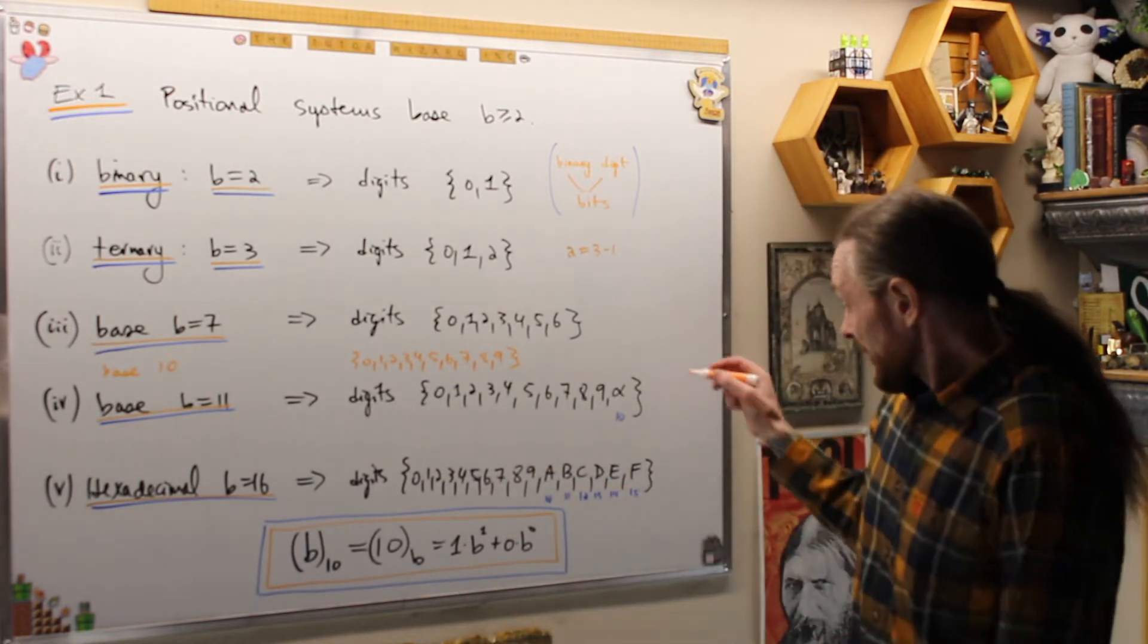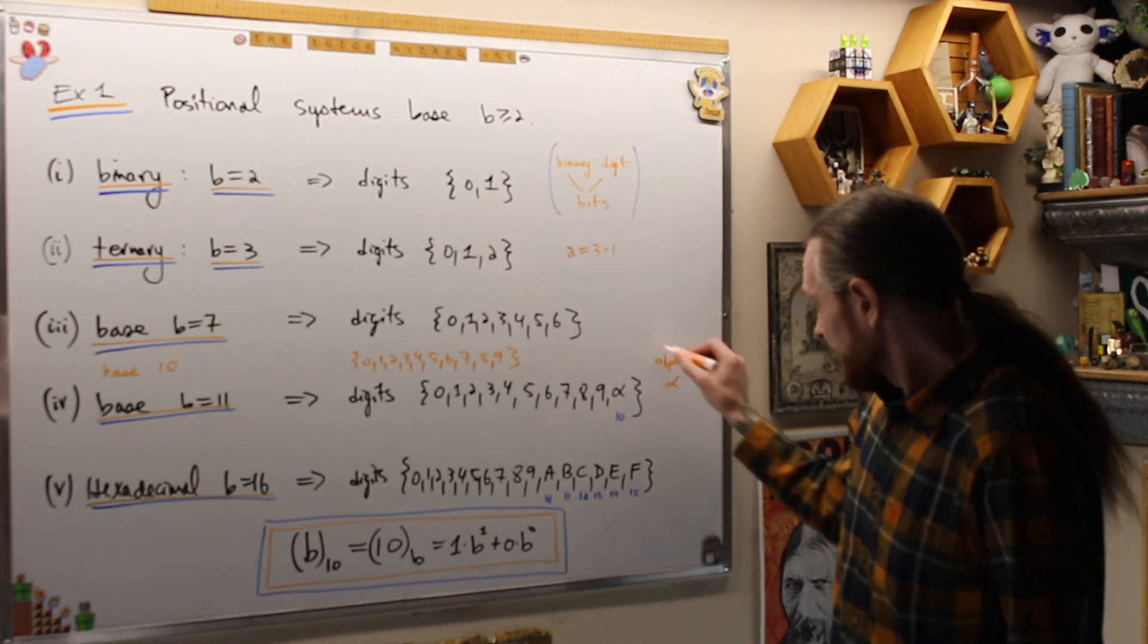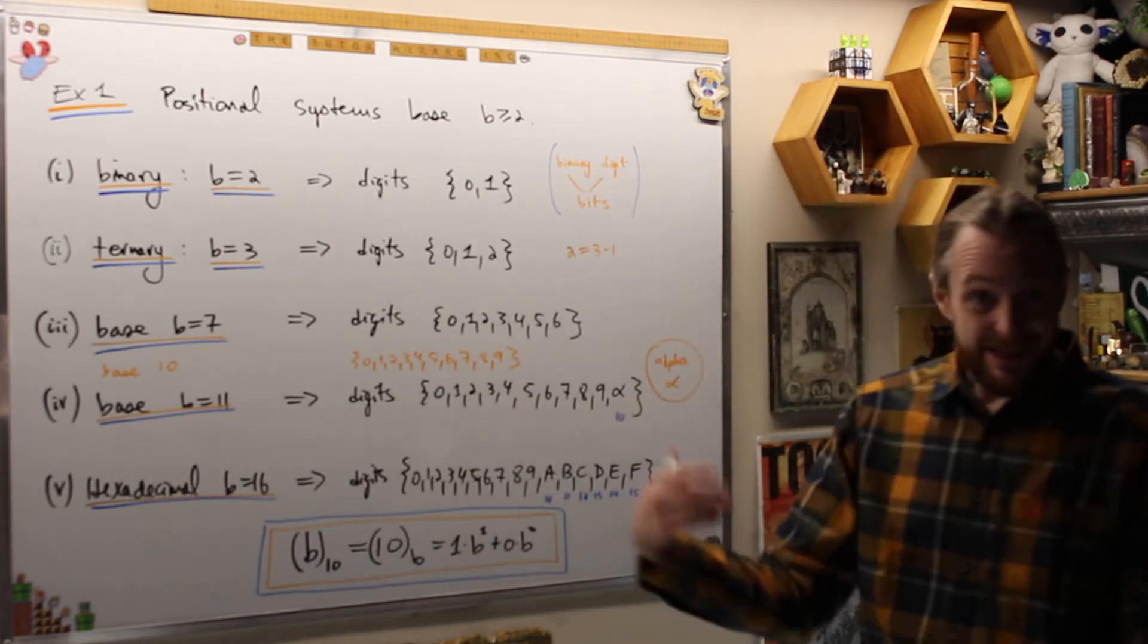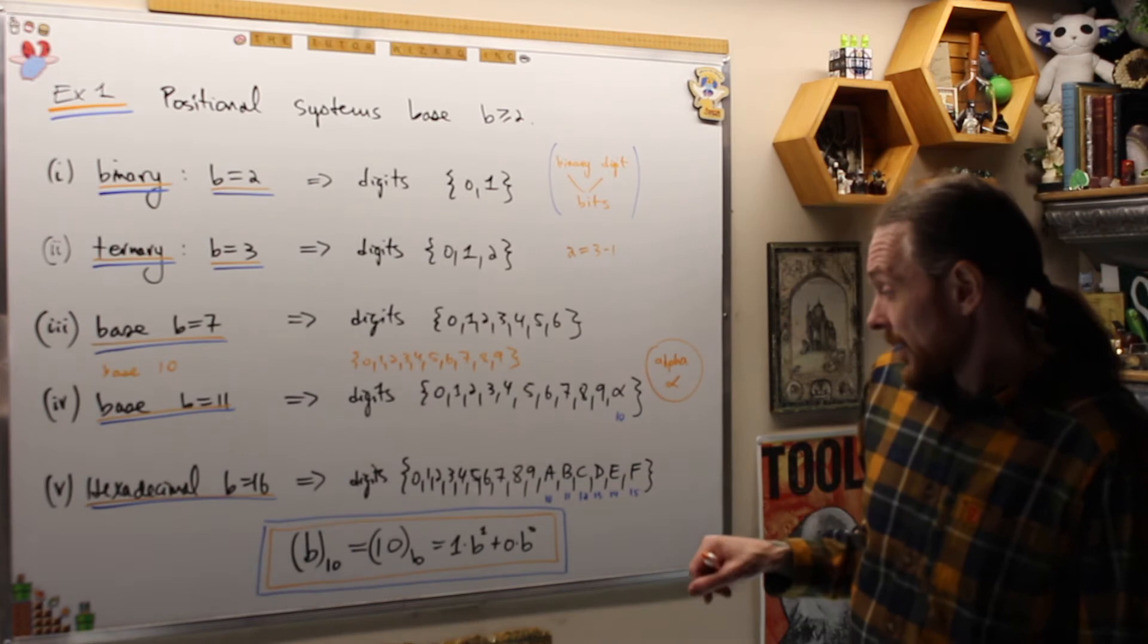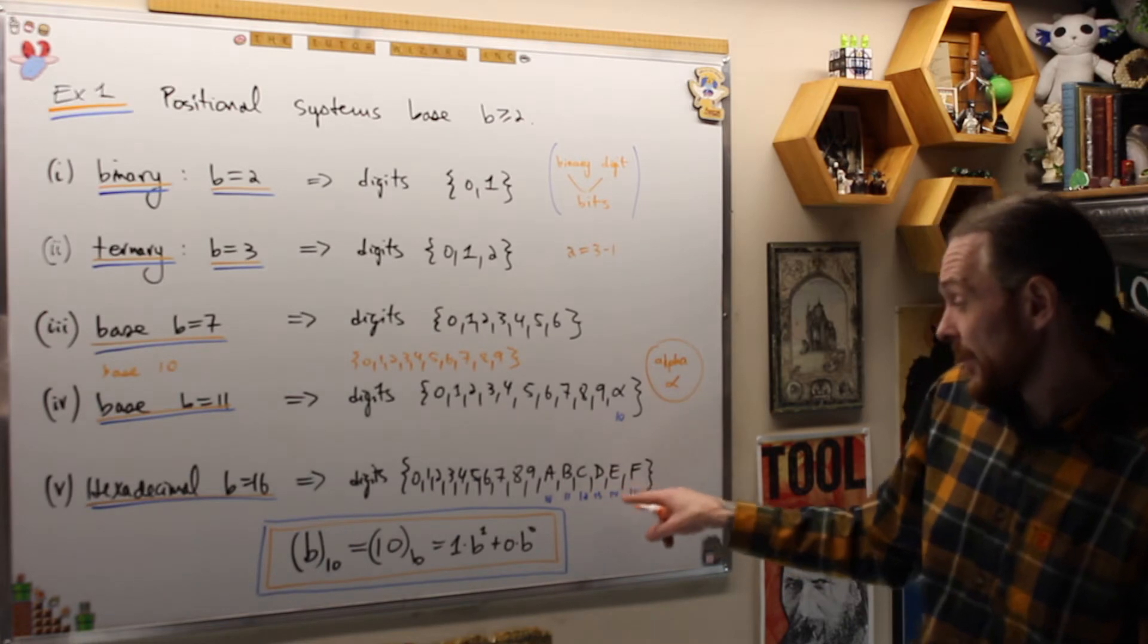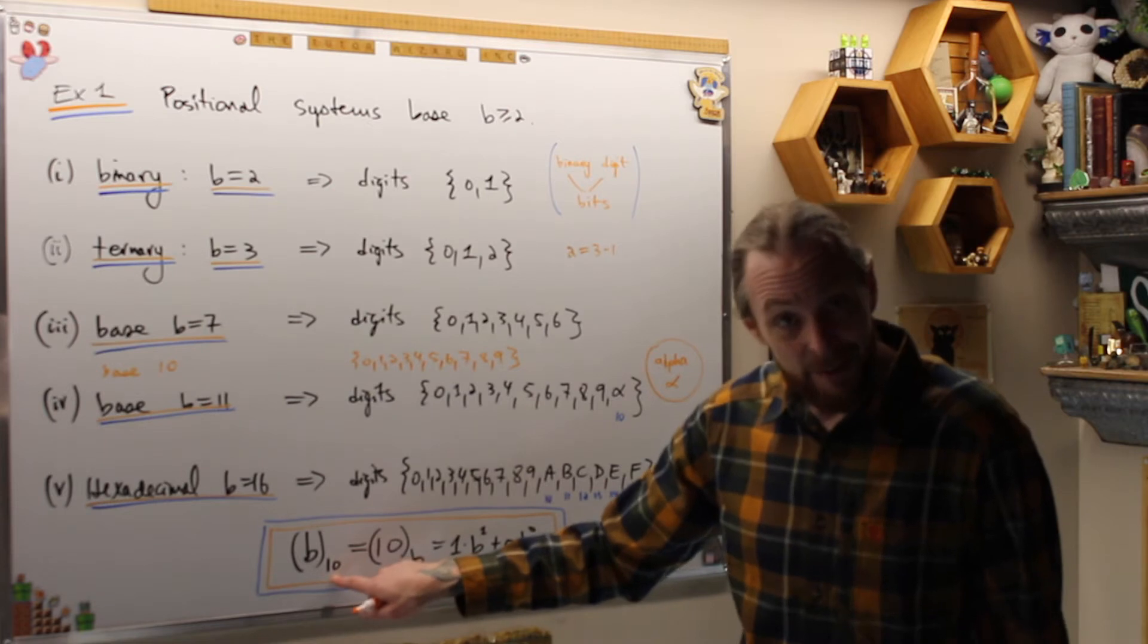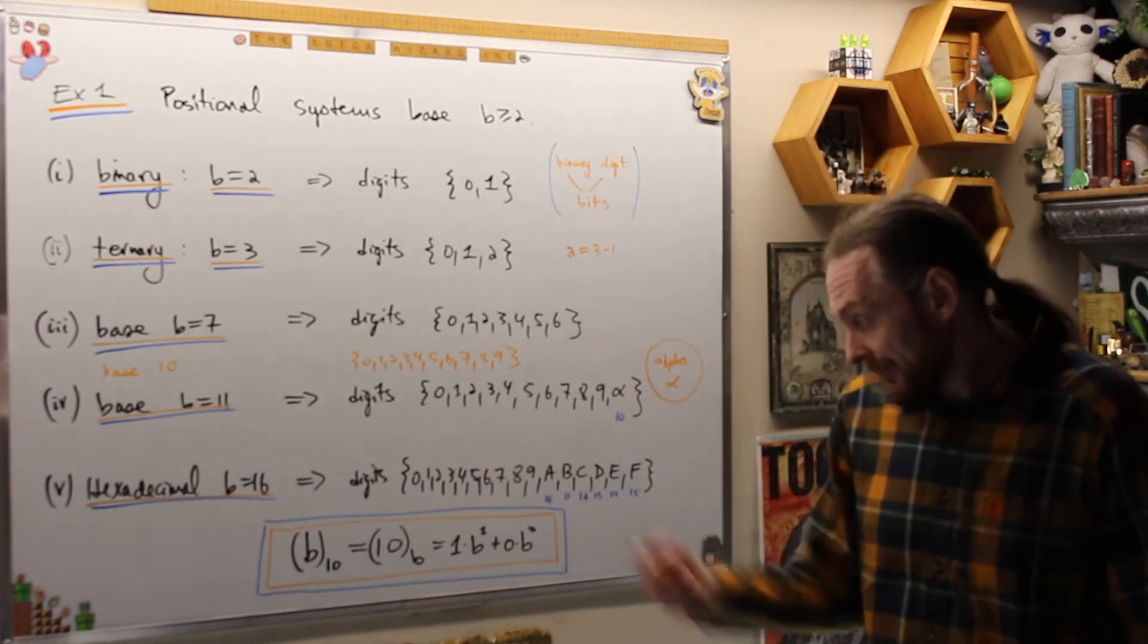But notice now when I use base 11, I have to use the symbols 0 to 9, but 10 can no longer be 1-0 because that means one group of 10 and no ones in base 10. Now we have to write it as a single symbol which we're going to call alpha. It's going to be 10 now. Another example is hexadecimal, which is used in computers. We're going to use the symbols A, B, C, D, E, F for the numbers 10, 11, 12, 13, 14, 15.